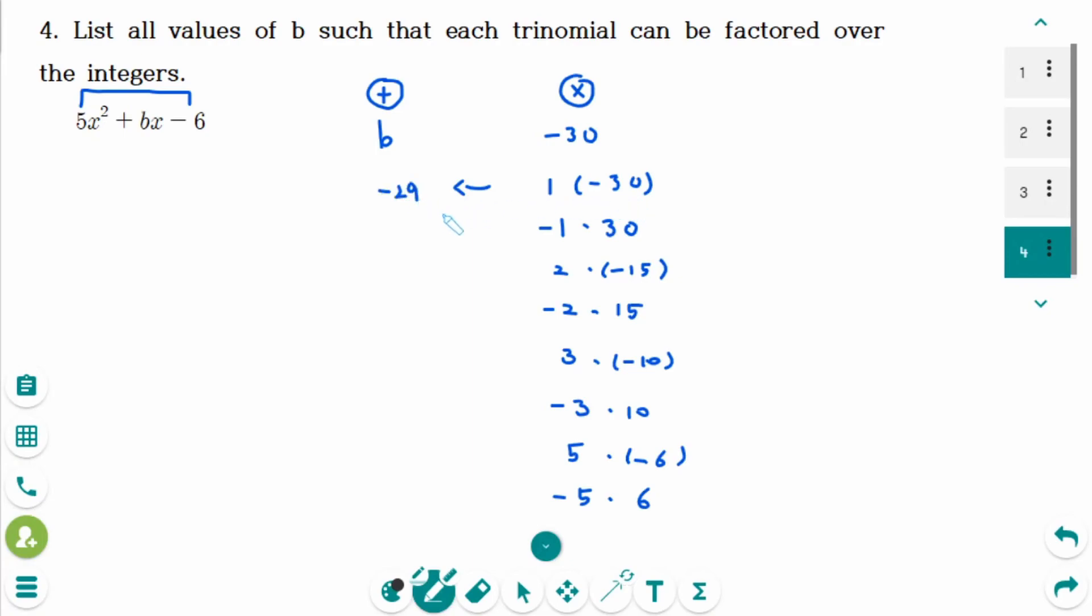So the value of b can be 1 and minus 30 together becomes minus 29. And minus 1 plus 30 is 29. Because b is the sum of two numbers. So add them together. Minus 13. And this together, 13.